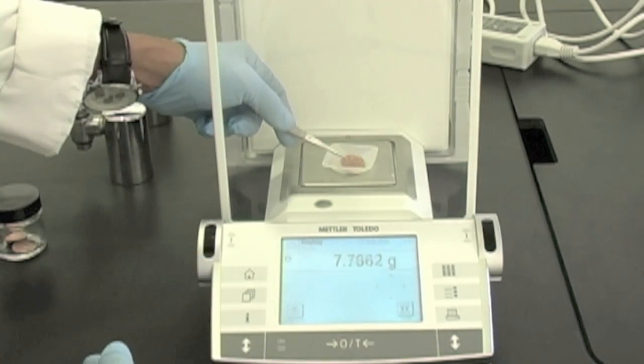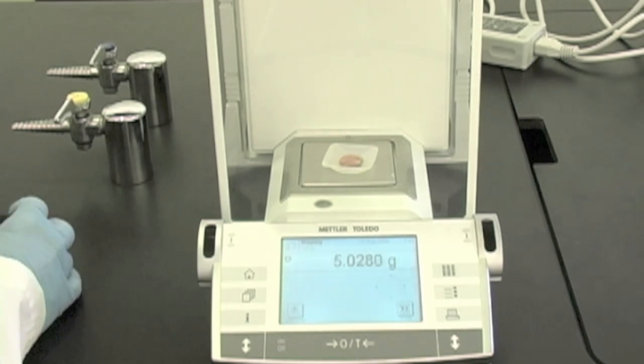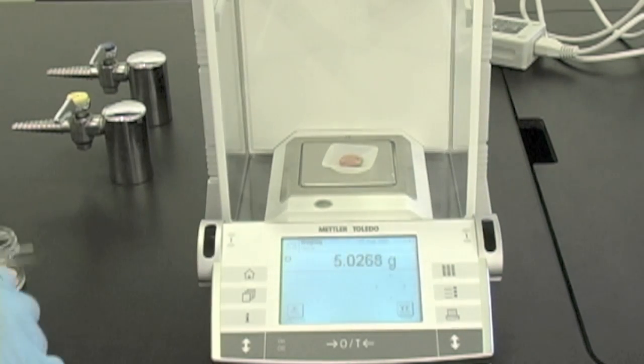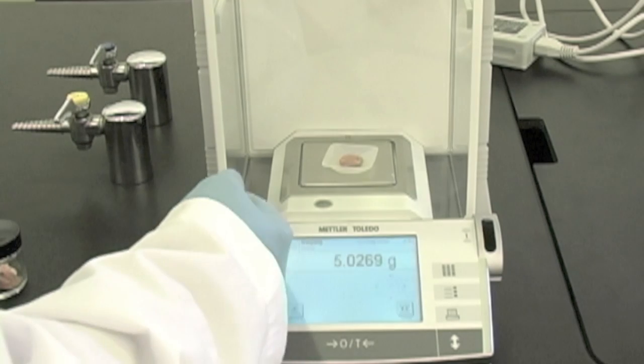Next, I would open and remove the third penny. Wait for the scale to stabilize. The difference would be the mass of the third penny. I would record this in my data sheet.